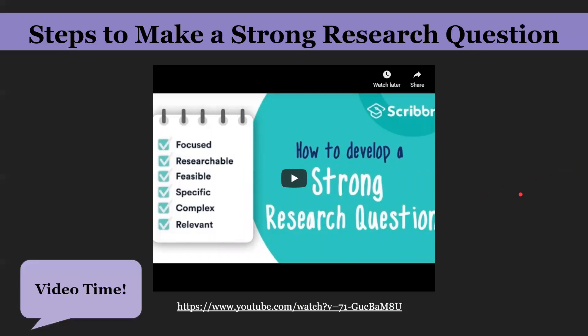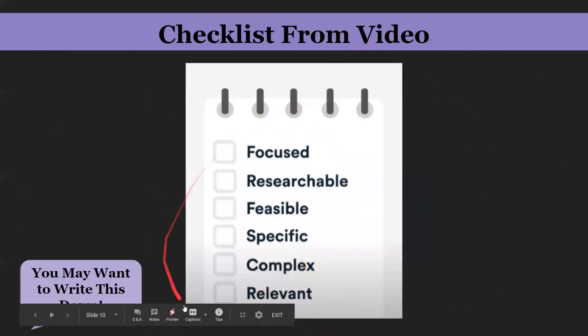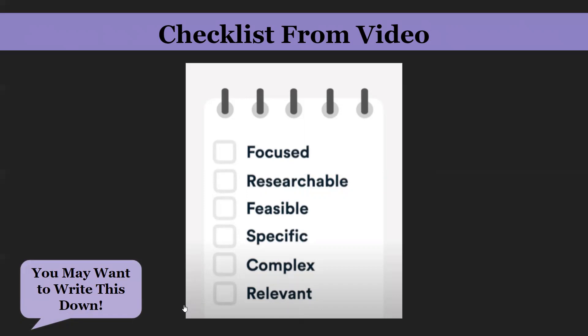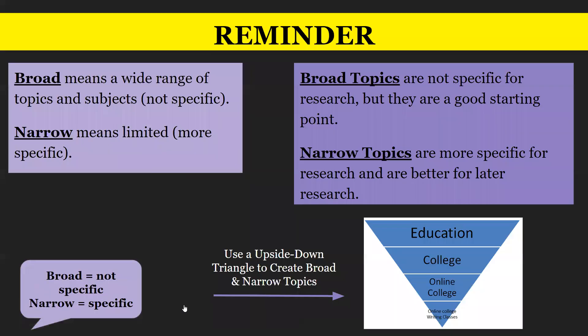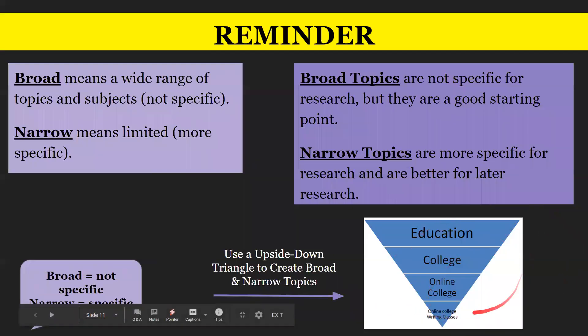Hopefully that helped. Here is the checklist from the video — you may want to write this down or come back to it when you have a research assignment. As a reminder: broad means a wide range of topics and subjects, so it is not specific; narrow means limited, which means more specific. Broad topics are a good starting point for research, while narrow topics are more specific and better for later research. You can use an upside-down triangle to create broad and narrow topics, with the broadest at the top and the narrowest at the bottom. Hope you learned something and have a good day!